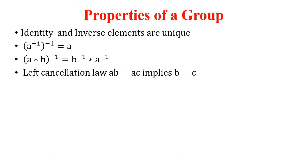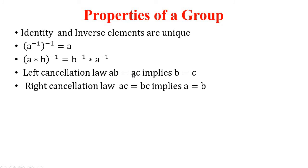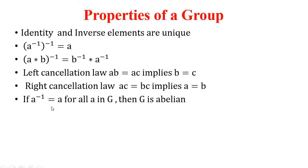Also, (a star b)-inverse equals b-inverse star a-inverse, for all a, b in G. Left cancellation law: ab = ac implies b = c, where a is cancelled from the left. Right cancellation law: ac = bc implies a = b, where c is cancelled from the right.